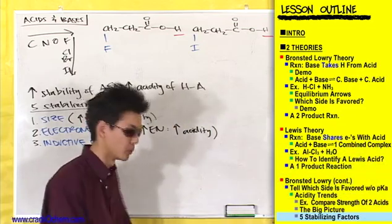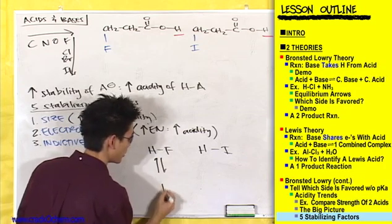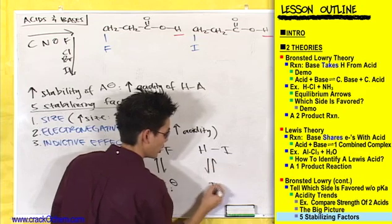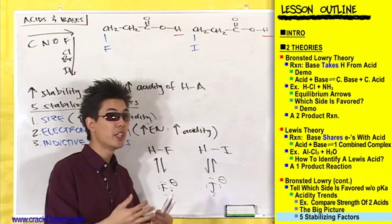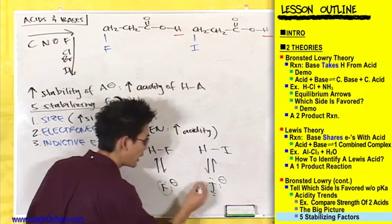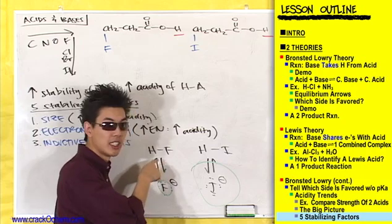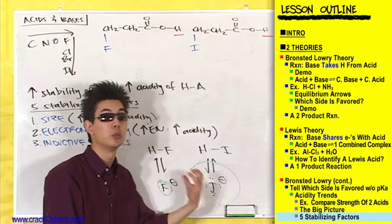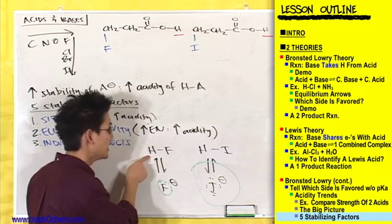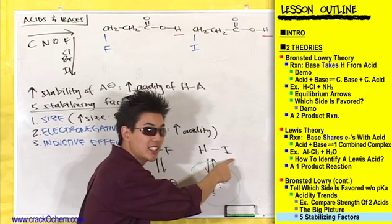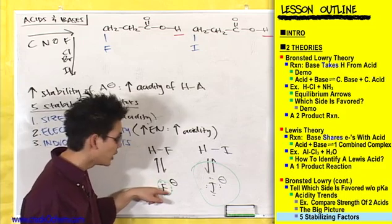Let me show you when size was an issue. We had HF and HI turning into their conjugate bases: HF → F⁻ and HI → I⁻. The bigger you are, the more stable you are, because the bigger you are, the better you are at dispersing charge. Fluorine is small, iodine is big — so iodine disperses the negative charge better, making it more stable. That's why HI was more acidic than HF. In that case, these hydrogens were directly connected to the atoms we were comparing.